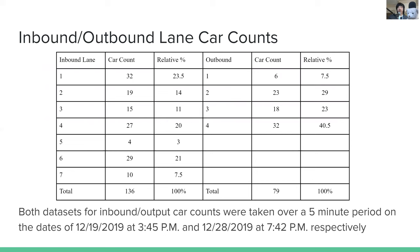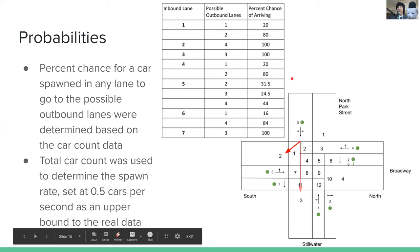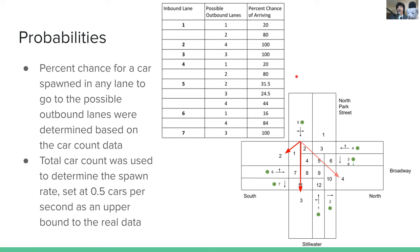To have an accurate simulation, we needed to find the relative percent of vehicles entering each inbound lane and where they would go. We went out and counted cars over a 5-minute period on two occasions. Using those probabilities, we found the probability that if a car enters any specific lane, what outbound lane it would go into. For example, lane 5 is the only lane with three options: a 31.5% chance of turning right into outbound lane 2, a 24.5% chance of going straight into outbound lane 3, or turning left into lane 4. Right-turn-only lanes such as 2, 3, and 7 have a 100% chance of turning right.